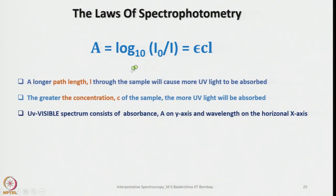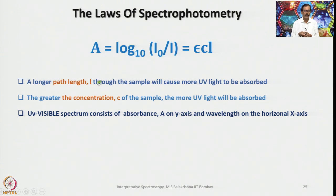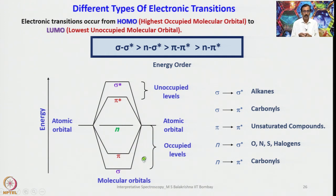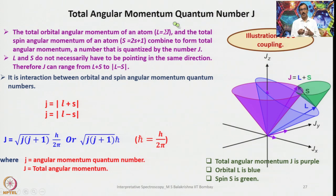Moving on to UV-Visible spectroscopy: the Beer-Lambert equation is very important. A longer path length through the sample causes more UV light to be absorbed; a greater concentration also means more absorption. A UV-Visible spectrum consists of absorbance (A) on the y-axis and wavelength on the x-axis. Different types of electronic transitions are: σ→σ* (highest energy), π→π*, and n→π*. How these energy levels change with functional groups and conjugation has already been discussed. σ→σ* is seen in alkanes; n→σ* in O, N, S and halogen compounds; π→π* in unsaturated compounds; and n→π* in carbonyls.